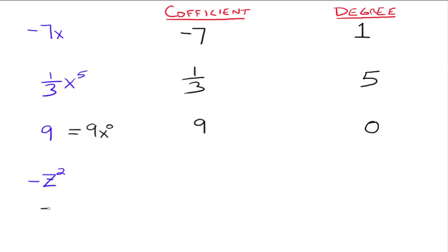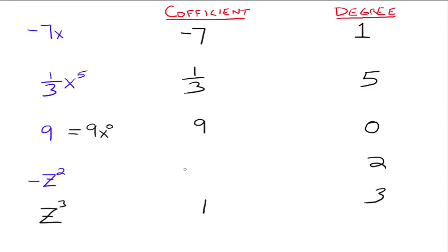Let's add z cubed. Looking at z cubed, clearly the degree is 3. The number out in front isn't written, so it's understood to be 1 — we just don't write it. So the coefficient is 1. For negative z squared, clearly the degree is 2, but with the minus sign out in front, the coefficient is negative 1. It's very important to recognize when the coefficient of a monomial is 1 or negative 1.